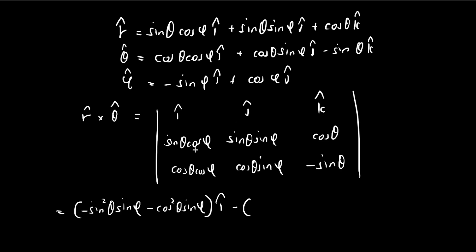And then for the j component, we take the product of these two. So we have negative sine square theta, cosine phi minus cosine square theta, cosine phi. This is in the j direction. And then we have a final component in the k direction. So we have sine theta, cosine phi, cosine theta, sine phi minus sine theta. So now we're taking the product of these two terms. Sine theta, sine phi times cosine theta, cosine phi. And this is in the k direction.